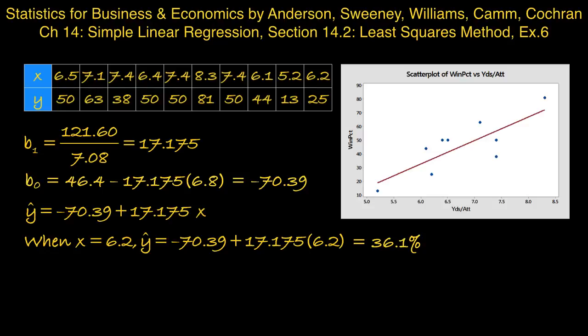And this is where that value comes in our scatter plot. It's the value on the regression line when yards per attempt is 6.2.